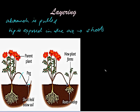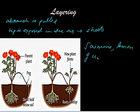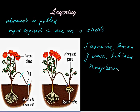The branch is then cut off from the parent plant and is able to grow independently. This type of artificial propagation by layering is done in jasmine, lemon, guava, hibiscus (china rose), and raspberry.